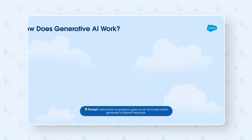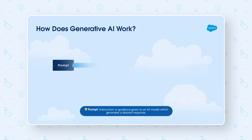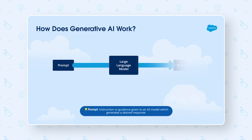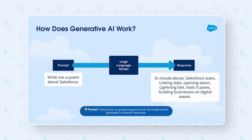To get started with building your first prompt, the first thing you need to understand is how generative AI works. You start with a prompt that passes through a large language model to generate a response. For example, we can take the prompt 'write me a poem about Salesforce,' which goes through our large language model and generates the response: 'In clouds above, Salesforce source, linking data, opening doors, lightning fast trails it paves, guiding businesses on digital waves.'